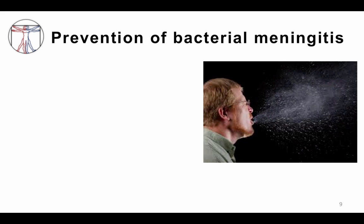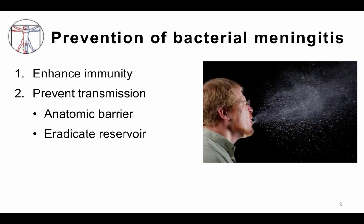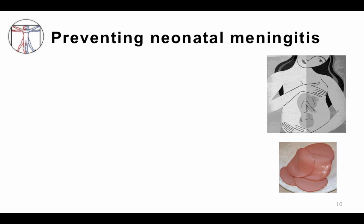How do you prevent bacterial meningitis altogether? You can enhance immunity through vaccines, prevent transmission using barriers like masks to prevent droplets, or eradicate a reservoir — for example, giving antibiotics to women colonized with group B strep prior to delivery to eliminate that reservoir so it won't infect the neonate. You can also treat an infection before it becomes disease, such as eradicating Neisseria meningitidis colonization in exposed contacts before they develop meningitis.